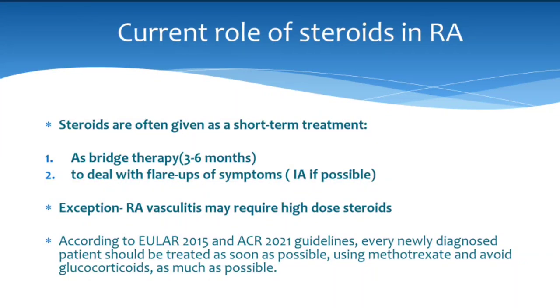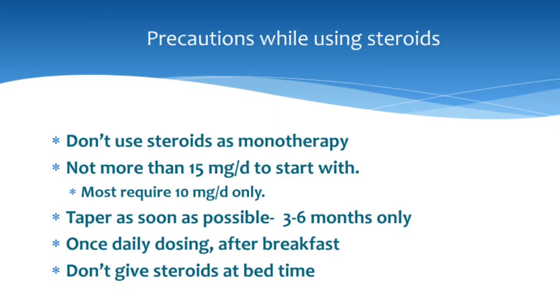Regarding steroids: they are given as short-term treatment only. Never start steroids as the only treatment for rheumatoid arthritis. Use as bridge therapy — short period, taper, and stop — or to deal with flares, when intra-articular or intramuscular steroids may also be used. Exception: rheumatoid vasculitis may require high-dose steroids. Per EULAR 2015 and ACR 2021 guidelines, every newly diagnosed patient should be treated as soon as possible using methotrexate and glucocorticoids should be avoided as much as possible. Do not use steroids as monotherapy, not more than 15 mg/day to start (most require 10 mg/day only), taper as soon as possible — three to six months — and give once daily after breakfast.